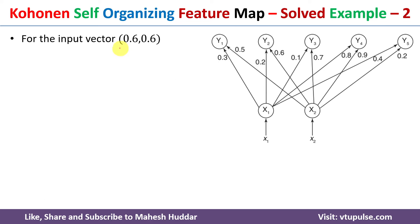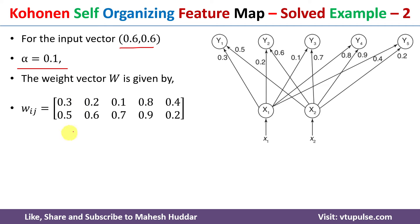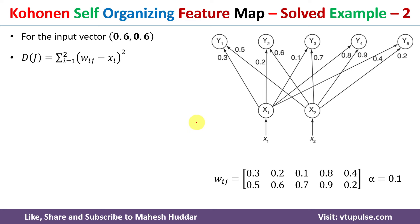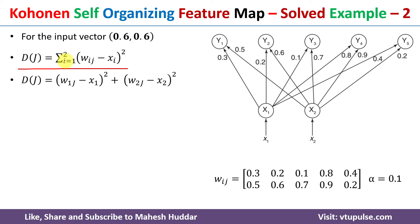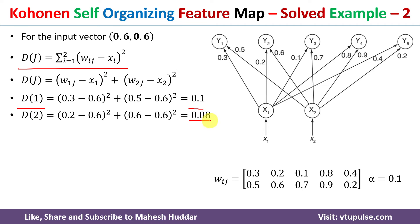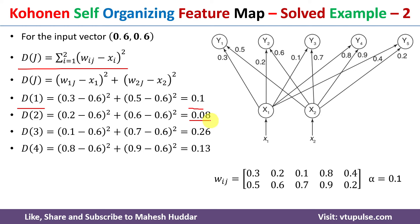Now we consider the next input vector 0.6, 0.6 with learning rate alpha = 0.1. The updated weight matrix for cluster 1 is now 0.28 and 0.48 (from the previous step), cluster 2 remains 0.2 and 0.6, and so on. We again calculate the square of Euclidean distance using the same formula. Replacing j=1 gives d1 = 0.1; d2 = 0.08; d3 = 0.26; d4 = 0.13; d5 = 0.2.